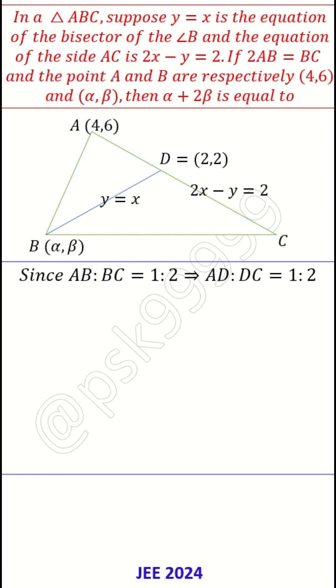With this information and the section formula, we can find point C. With the section formula, you can apply it on (4,6) and (x,y). If you assume C is (x,y), then with this information, we can get the value of (x,y), which is nothing but C = (-2,-6).